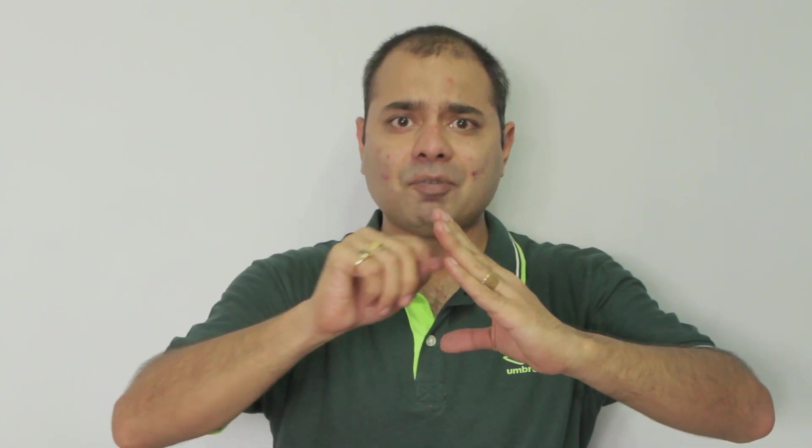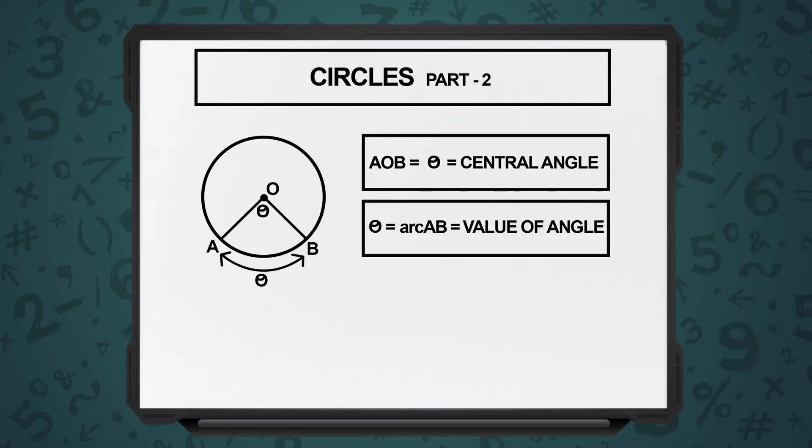The first thing we want to know is what will be the value of this angle, because we know angles are measured in degrees. There are other measures also, but for now we will stick to degrees. In the central angle, the value of this central angle will be the same as the value of the angle of the arc portion. And this entire thing is known as a sector.